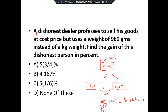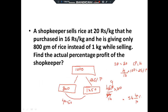Question 3: 'A dishonest dealer professes to sell his goods at cost price but uses a weight of 960 grams instead of a kg. Find the gain percentage.' This is Type 1. Actual weight = 1000 (upper box), cost price = 960 (left box), selling price = 1000 (right box). Difference = 40. Profit percentage = 40/960 × 100 = 4.1666 percent. Try to verify this yourself.